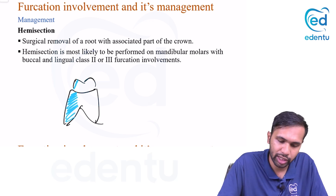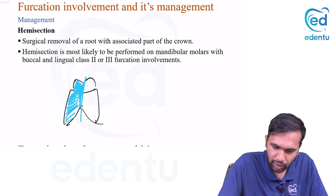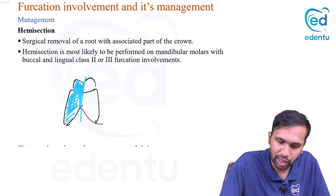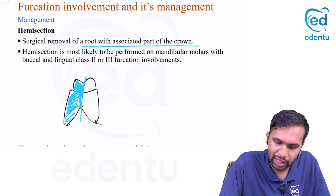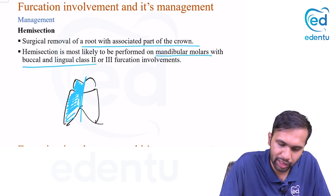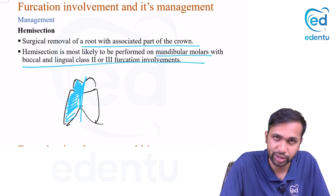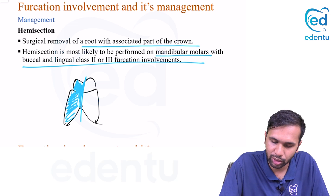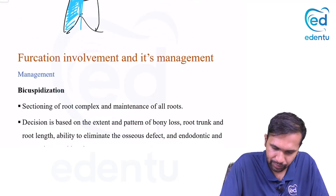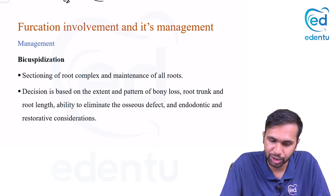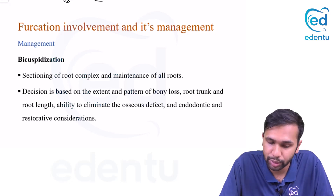Hemisection is similar to root resection, but in hemisection you remove the affected root and also the corresponding portion of the crown — surgical removal of a root with its associated portion of the crown. It is most commonly performed on mandibular molars with buccal and lingual class 2 or 3 furcation involvement.